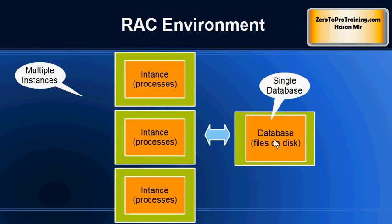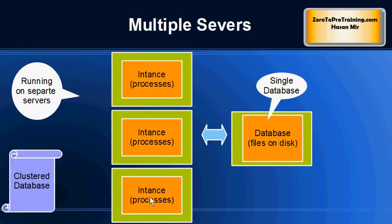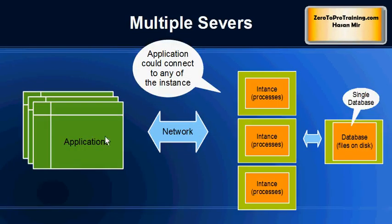In a non-RAC environment one software instance talks to a single database. In a RAC environment you have two or more software instances communicating with a single database. These software instances run on separate servers, and all these servers — consisting of the software instance machines plus the storage holding the disk — together are referred to as a cluster. The applications will connect to any of the machines running Oracle instances, and all instances talk to the same database files, which automatically brings load balancing.